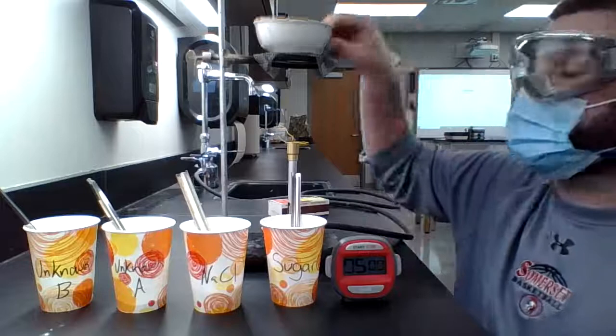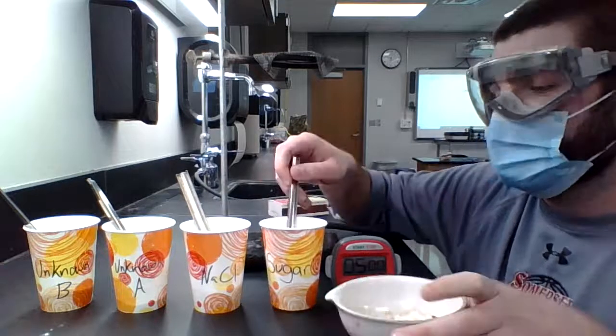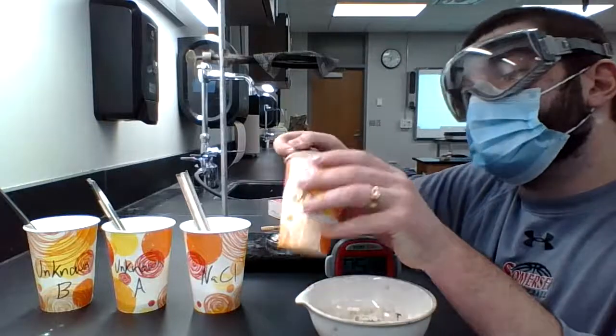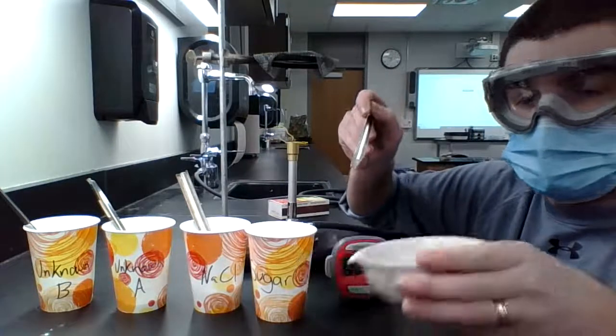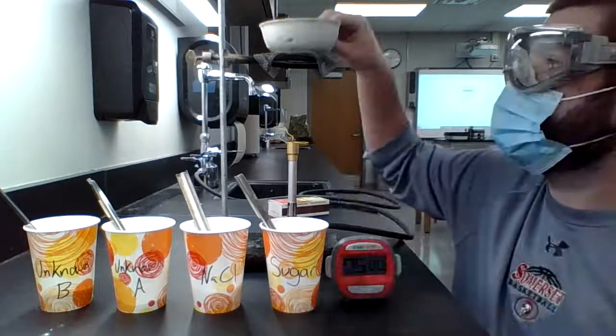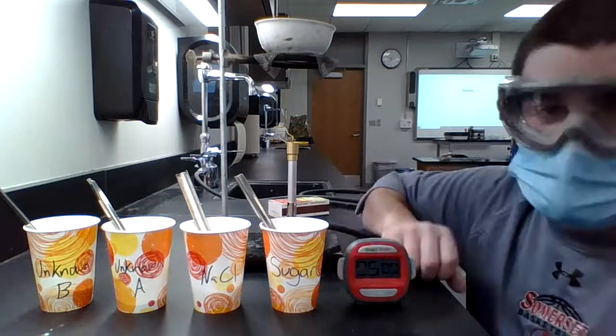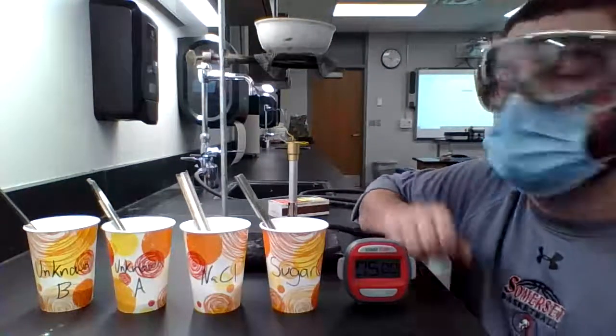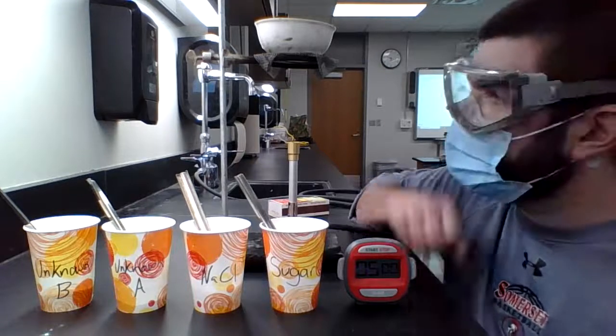What you're going to first start to do, you're going to take your evaporating dish, you're going to take a small sample, just a little spoonful, it doesn't need to be much. And you're just going to pour it into your bowl like so. And you're going to let it sit in the middle. And then I'm going to set this up on my wire gauze and my ring clamp. My timer is set to five minutes.